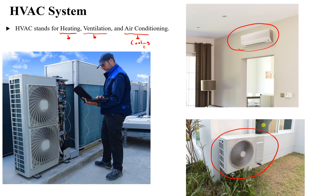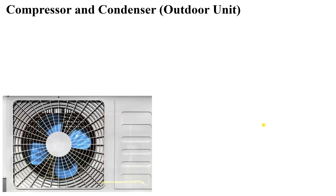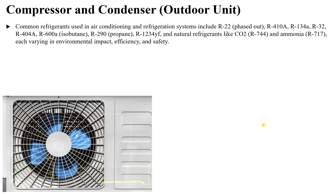Let's see how an air conditioning system works to cool down a room. The first component is the compressor and condenser, which are located in the outdoor unit outside your house. This outdoor unit contains the compressor and condenser. Inside the system, we use a refrigerant — a liquid or gas used in air conditioning and refrigeration systems. The concept of cooling in an AC system is the same as in a household refrigerator.